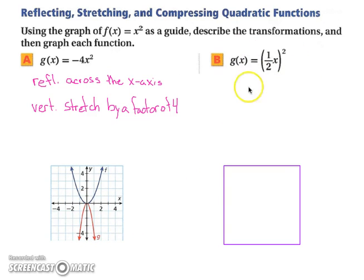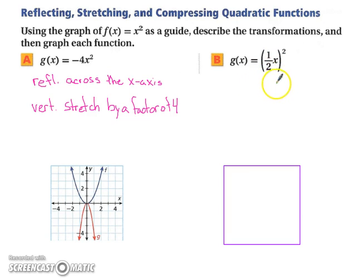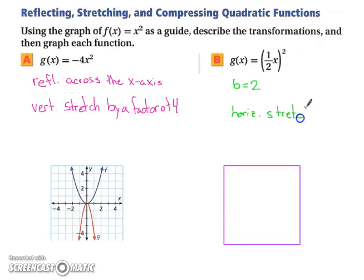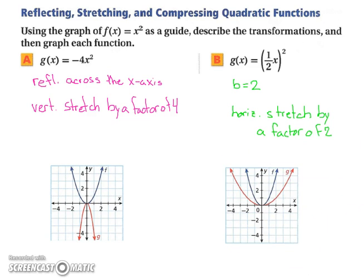Take a moment and pause the video and try part b. For part b, we have one half inside with the x. Since it's horizontal and the formula uses 1 over b, b equals 2 — not one half. So this is a horizontal stretch by a factor of 2. When we graph it, the parabola still opens upward, just stretched out horizontally.